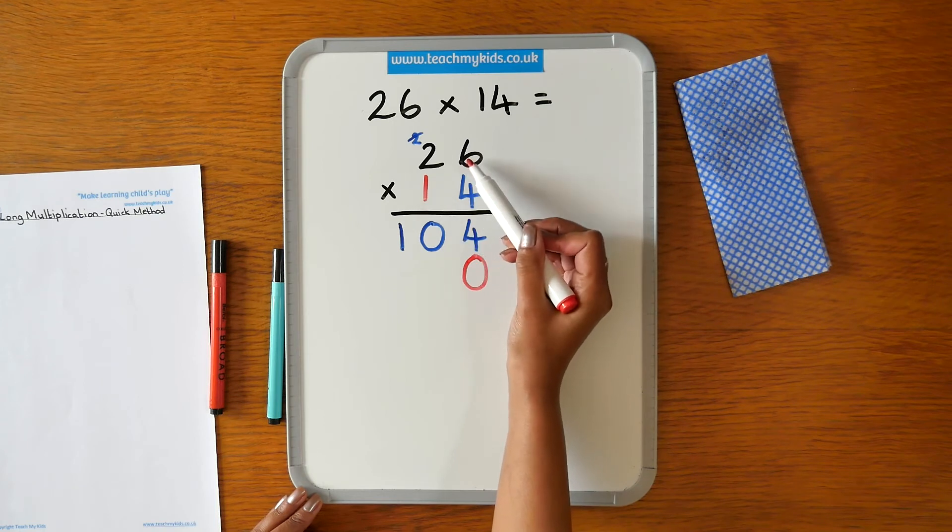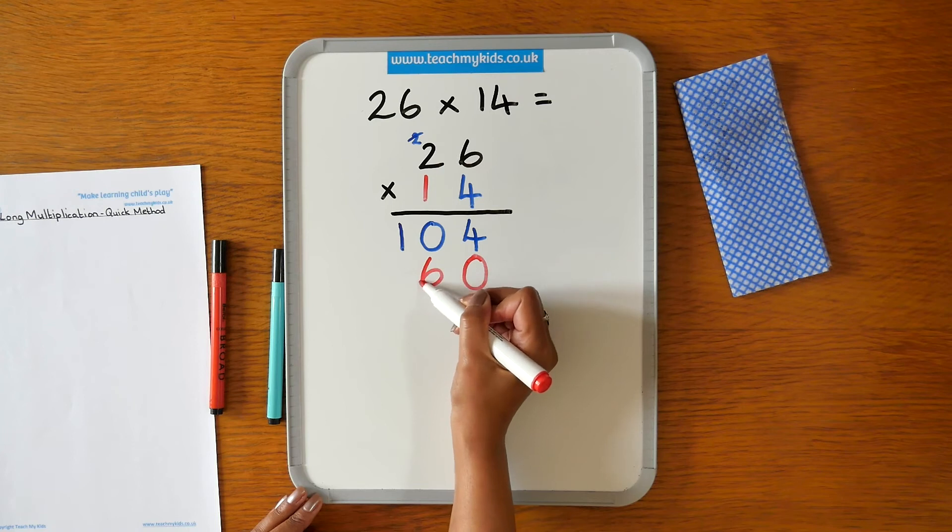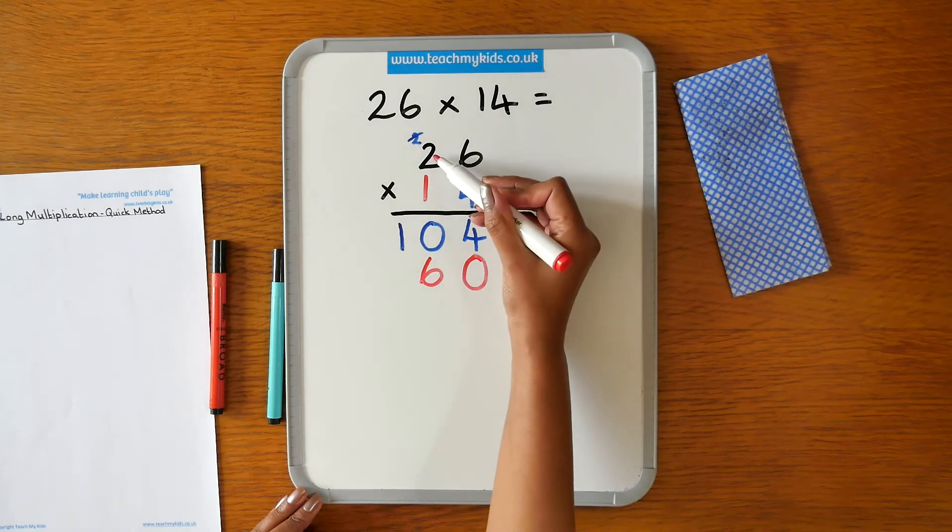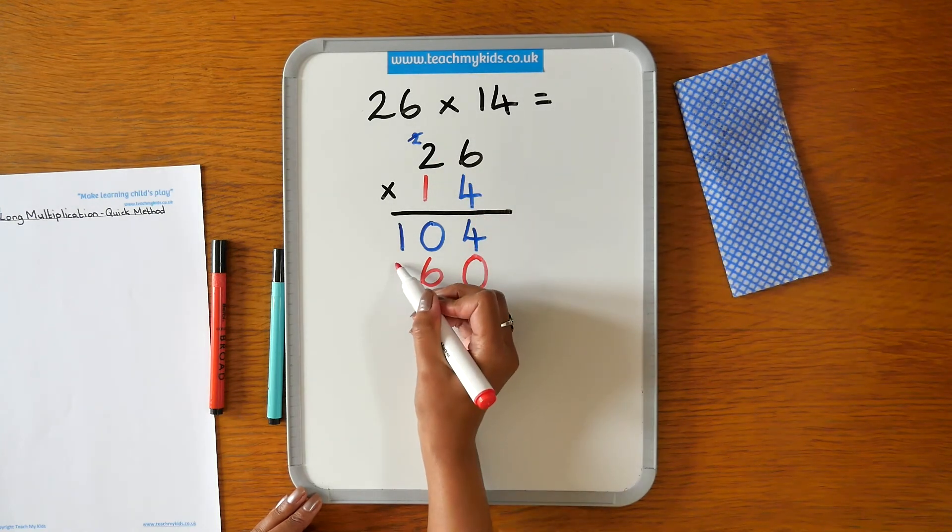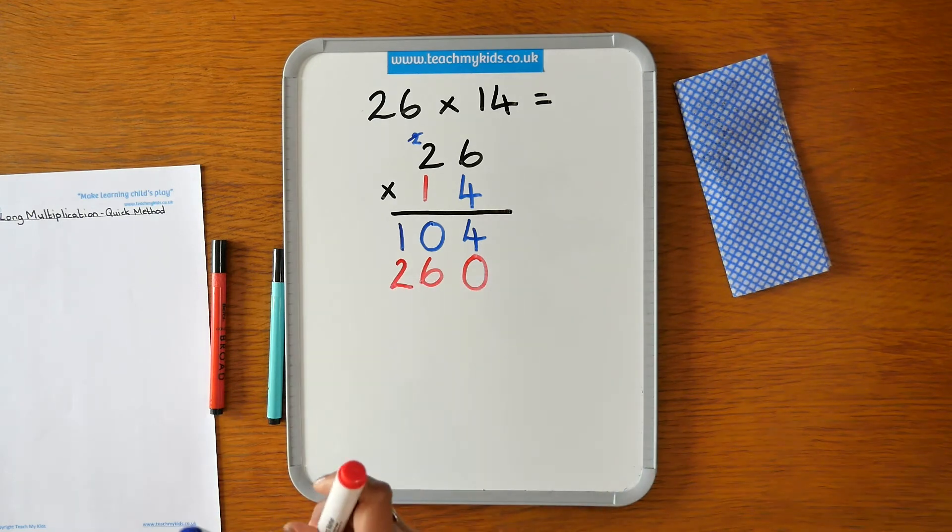So we do 1 times 6 is 6. 1 times 2 is 2. That's our first stage complete.